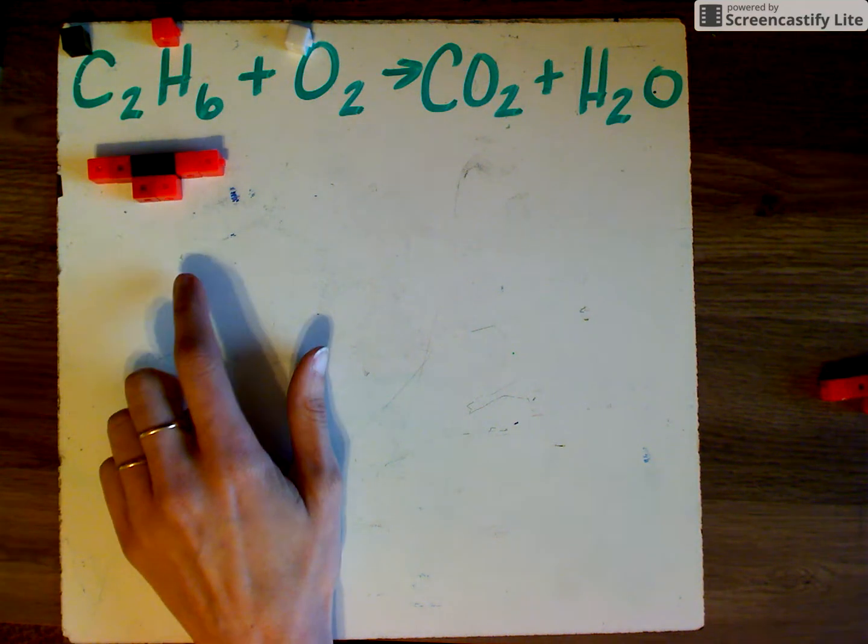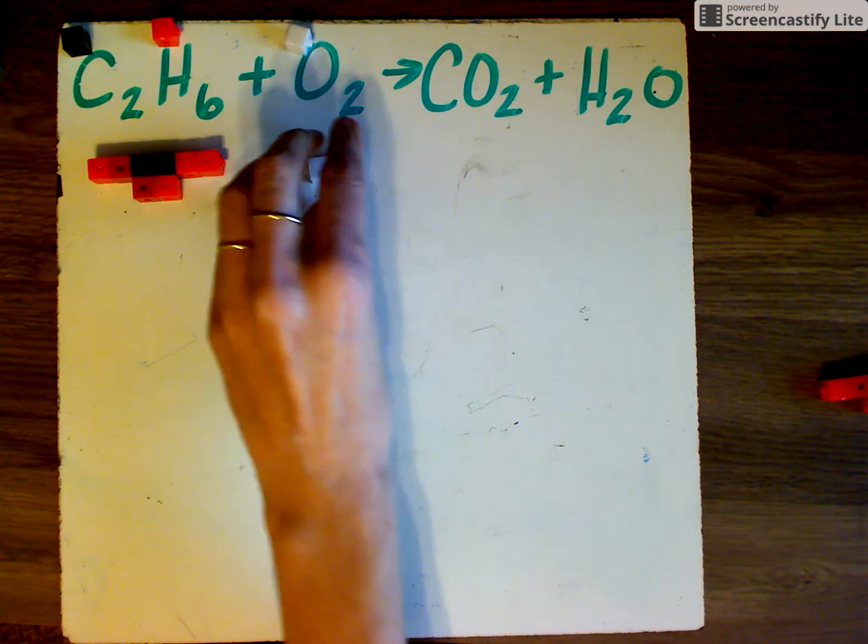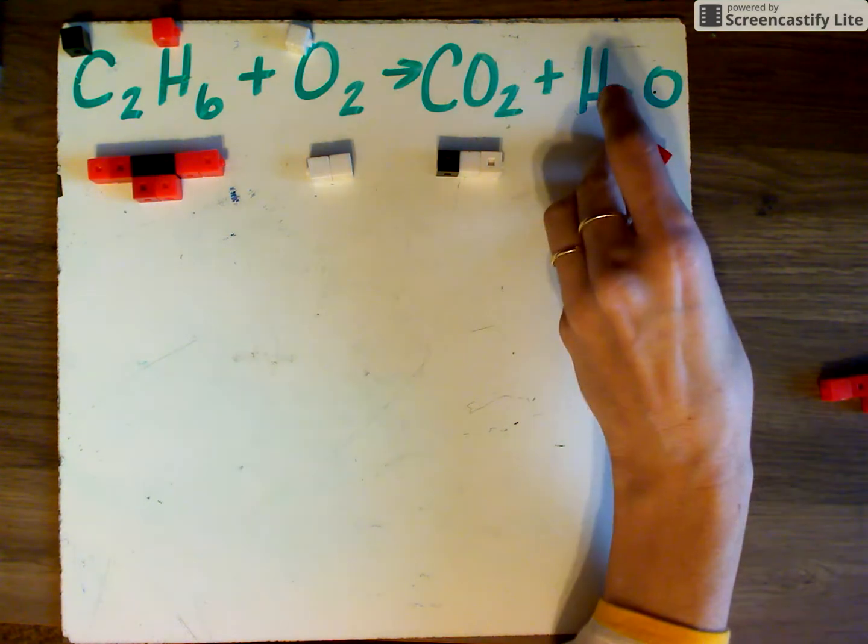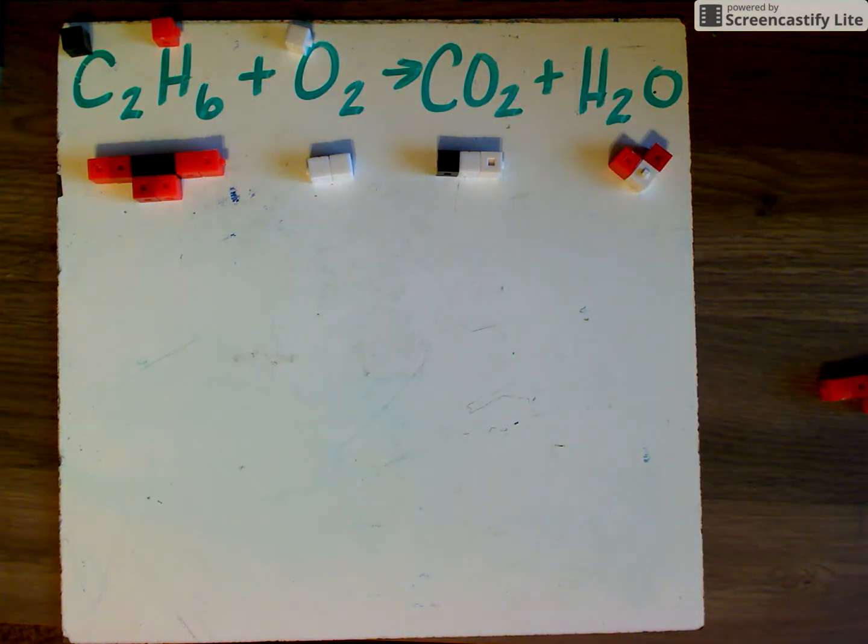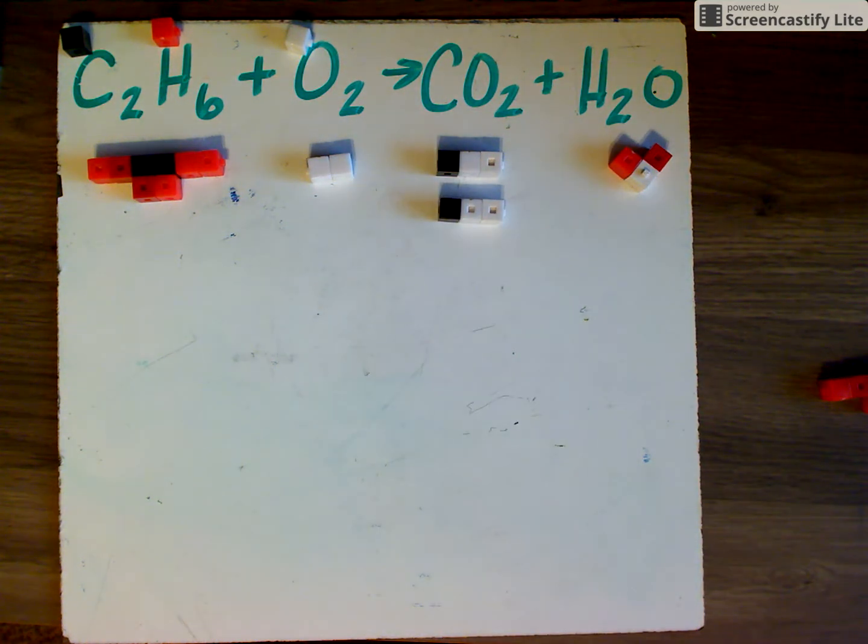Here is C2H6. So I've got my two blacks, I've got my six reds. I've got my O2. I've got my CO2. And I've got my H2O. We have two carbon atoms on the left. So we need two carbon dioxide molecules on the product side so that each side has two carbon atoms. That element would be balanced. So we're just going to add that on there.